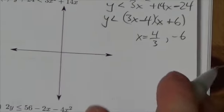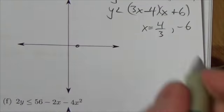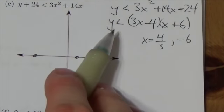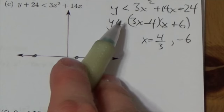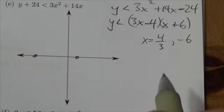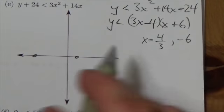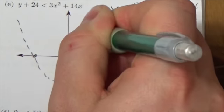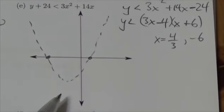So on the graph, kind of relatively speaking, that 4/3 is going to be close. The negative 6 is going to be back here. If you take a look at the inequality, it says less than, it's not or equal to. So it's going to be a dotted line and it's going to be a parabola that opens up. So it's going to look something like that. I don't exactly know how far down.